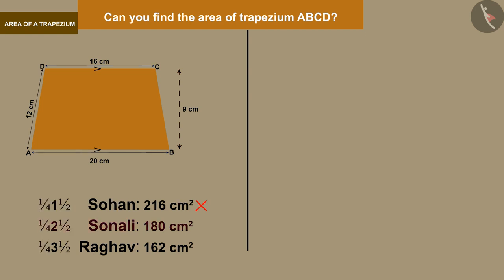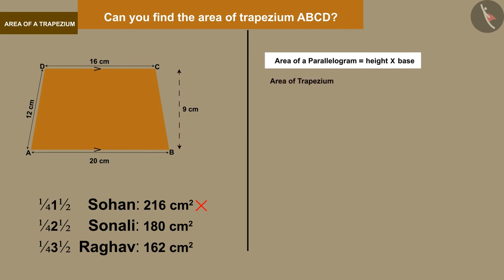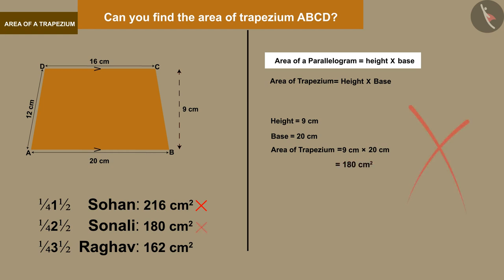Let us now understand Sonali's way. Sonali knew the formula for finding the area of a parallelogram and calculated the area of the trapezium using that same formula. In this way, Sonali got the area of the trapezium as 180 cm², which is the wrong answer.